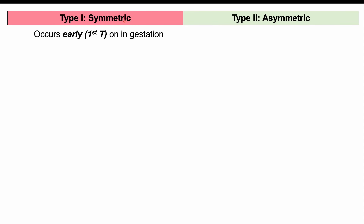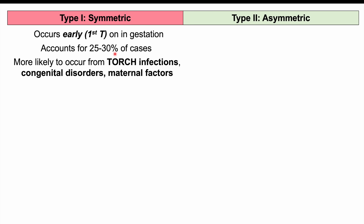Fetal growth restriction is broken into two types. Type 1 is symmetric, and Type 2 is asymmetric. Symmetric FGR most commonly occurs early in gestation, typically in the first trimester, and accounts for 25–30% of cases. It results from a global insult to the developing fetus, such as TORCH infections, certain congenital disorders like trisomy 18, or maternal factors like malnutrition occurring early in development.